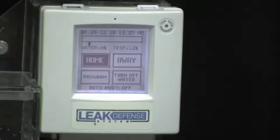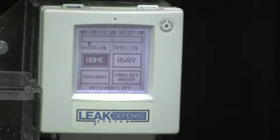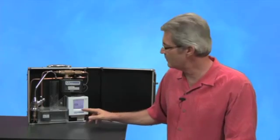The leak defense has two modes. The first mode as you see here is the home mode, when you're home washing dishes, flushing toilets, using water. The second mode is the away mode when there's no one home.